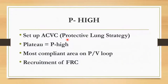Regarding the P-high setting: if the patient just got intubated and you're planning to go to APRV, a good approach is to set up on ACVC first, apply the lung protective strategy at 6–8 cc per kilogram, titrate PEEP to get the lowest drive pressure, and keep plateaus under 30 cmH2O. Once you do the plateau maneuver, that plateau pressure is a good starting point — a good surrogate — for setting the P-high.